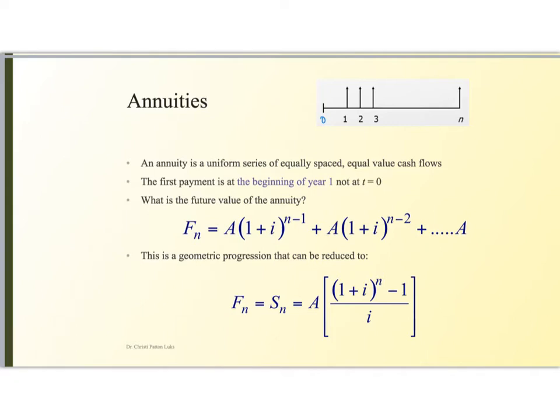At time zero you maybe took out a loan and then you begin making payments. The first payment is at the beginning of the first year or first time period. And we make these same things at the end of each different time period. The time begins at zero. The first payment begins at time one.